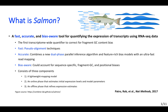Salmon is the first transcript-wide quantifier to correct for fragment GC content bias. It's fast because it uses pseudo-alignment techniques. It's accurate because it combines a new dual-phase parallel inference algorithm and feature-rich bias models with ultra-fast read mapping. It's bias-aware because it can account for sequence-specific fragment GC and positional biases.